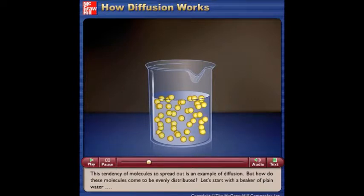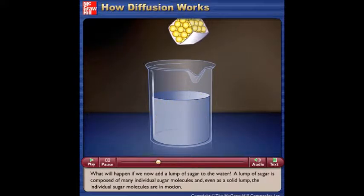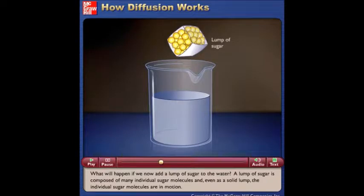But how do these molecules come to be evenly distributed? Let's start with a beaker of plain water. What will happen if we now add a lump of sugar to the water? A lump of sugar is composed of many individual sugar molecules. And even as a solid lump, the individual sugar molecules are in motion.